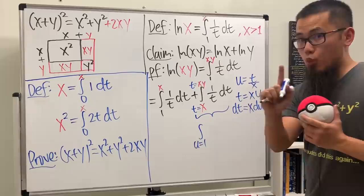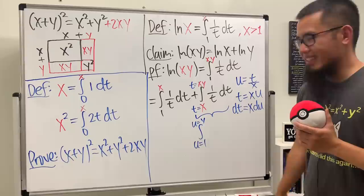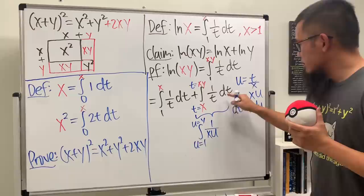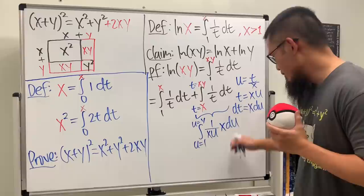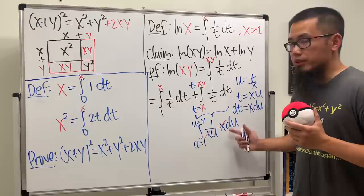Okay. Here, x is the starting. So, you put it here. So, we know u will be starting at 1. And then, if you put xy into here. Divided by x. u will be end up at y. Very nice, huh? Look at this. Here, we have 1 over t, which is xu. Dt is x du. Ah. Have a look. The x and x cancel out precisely. So, this is just the integral going from 1 to y. 1 over u du.